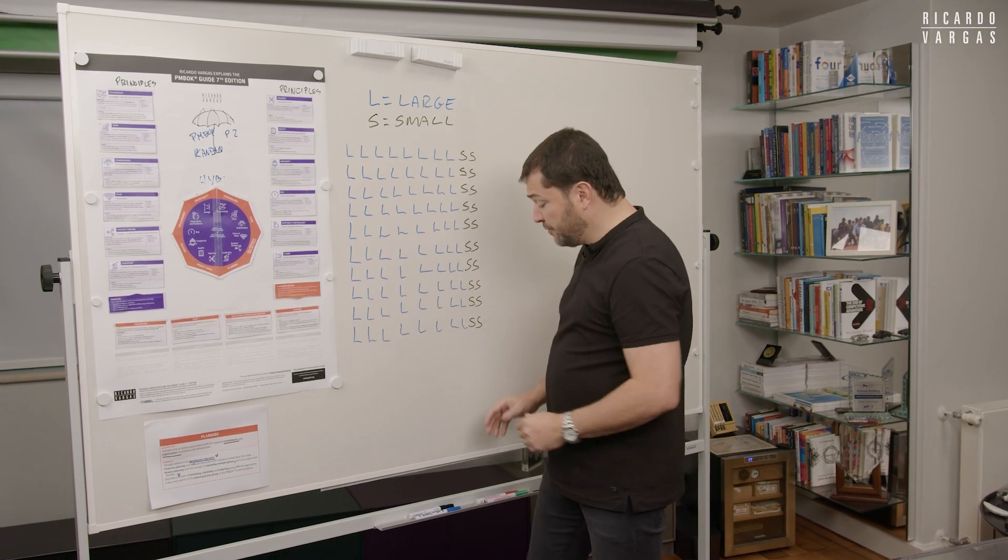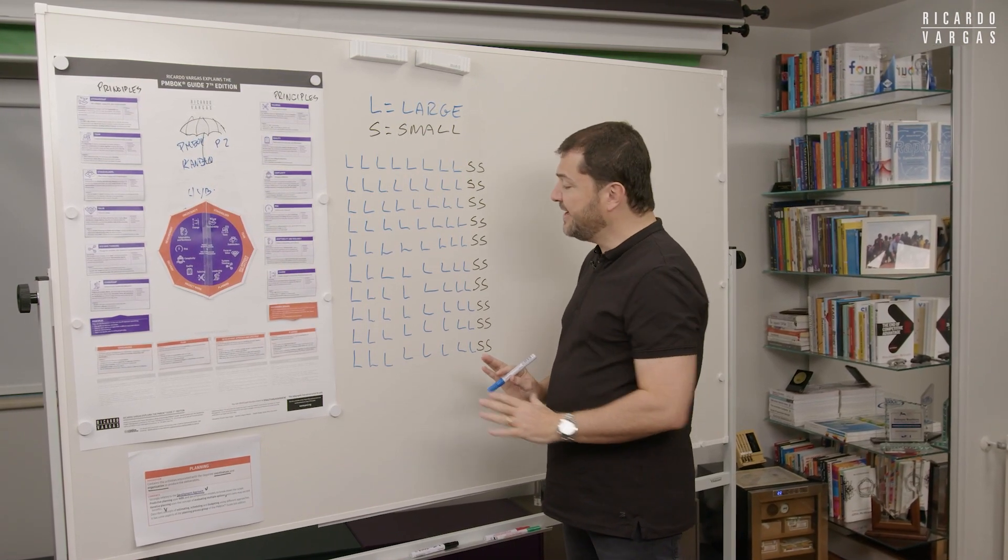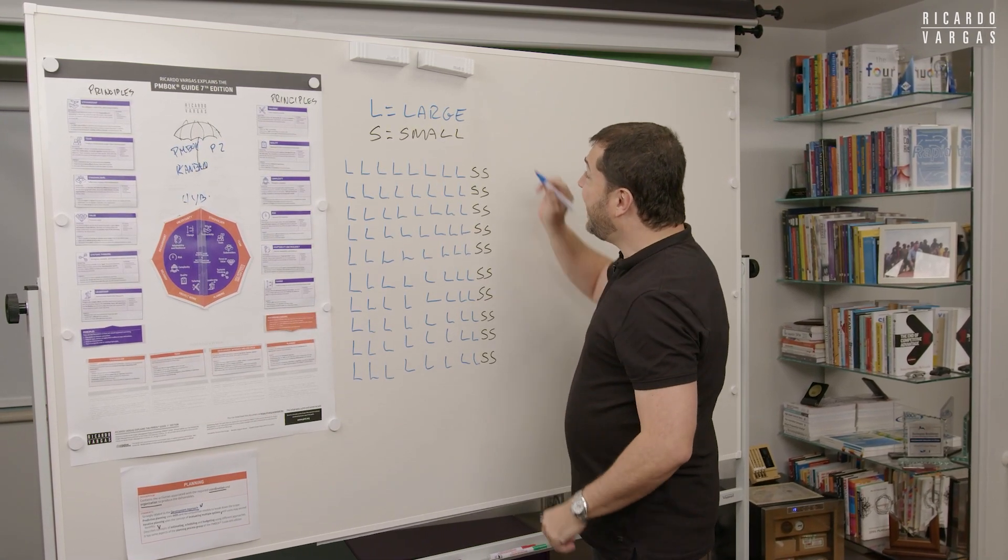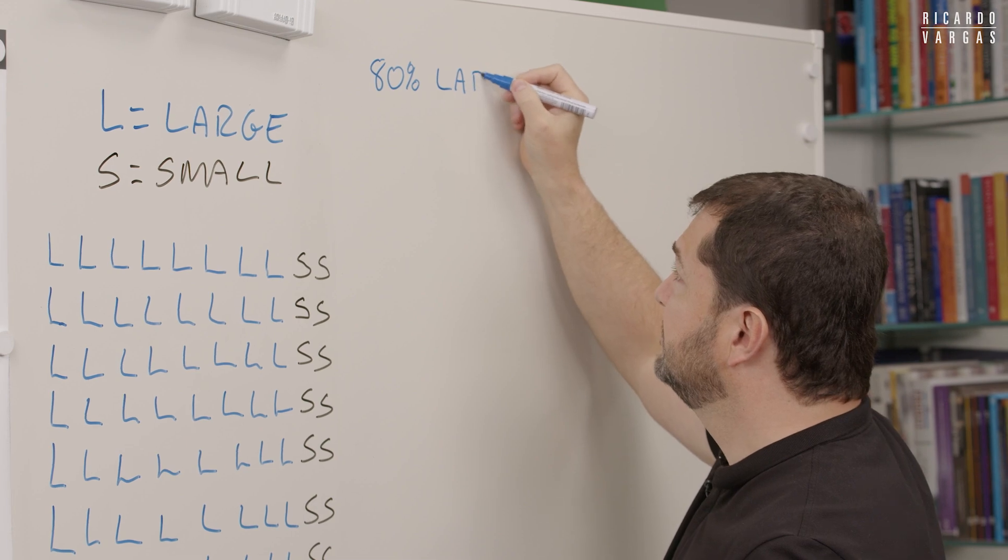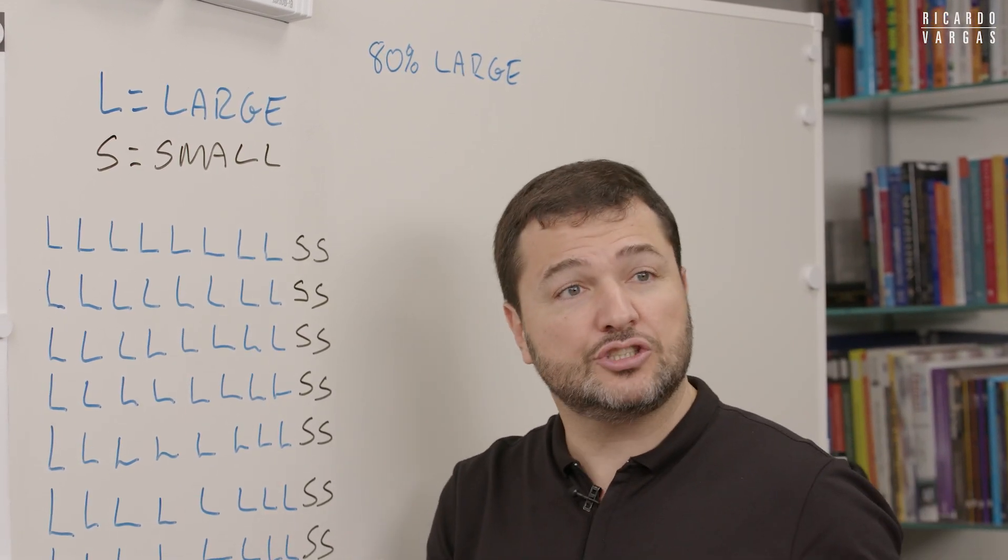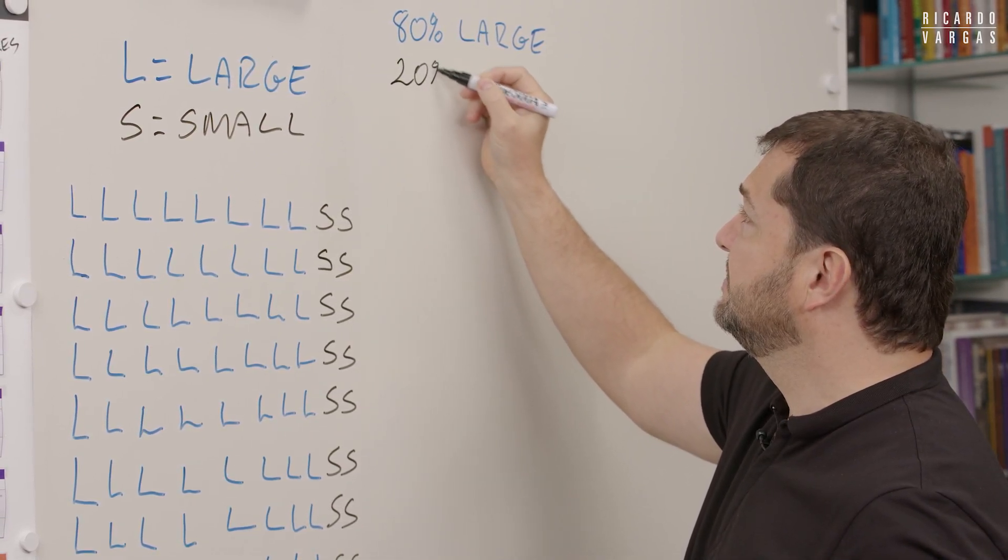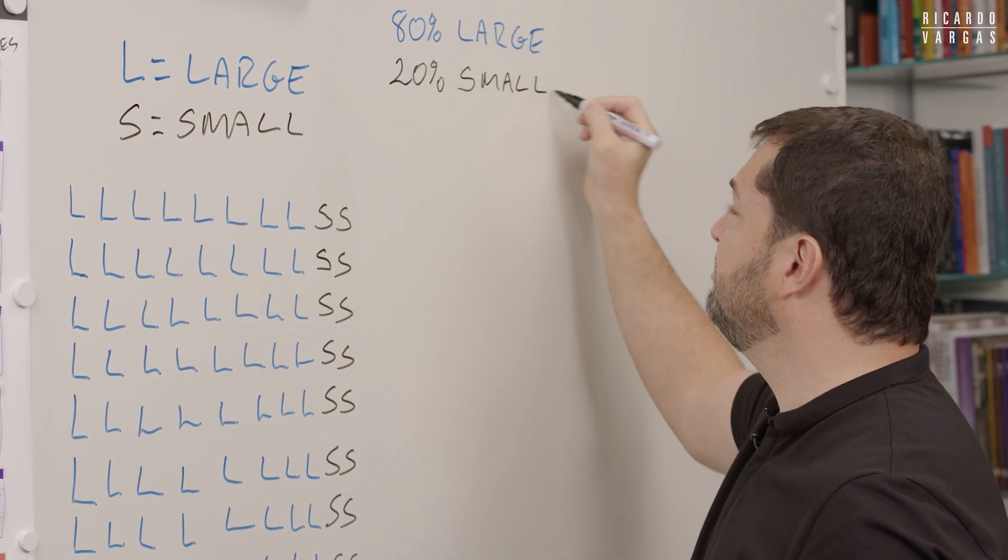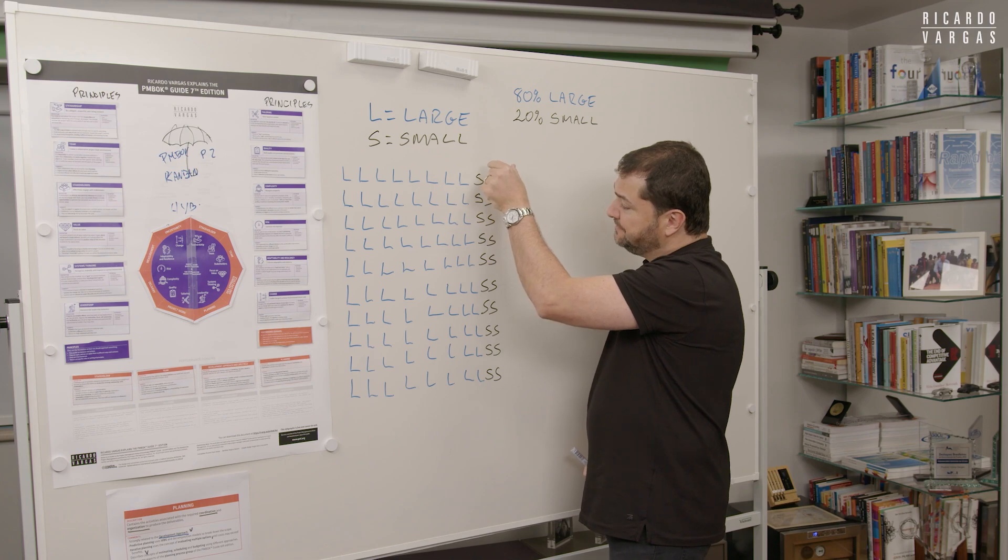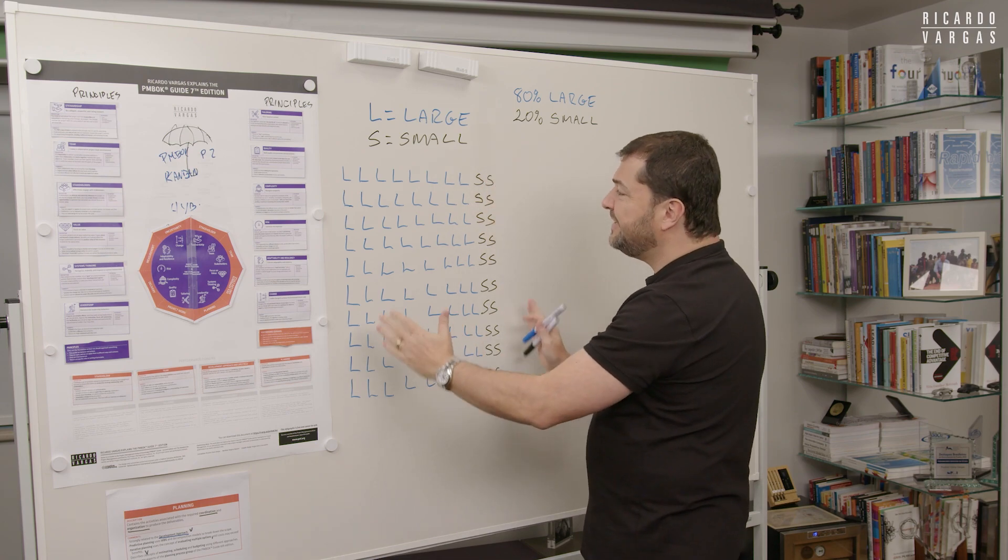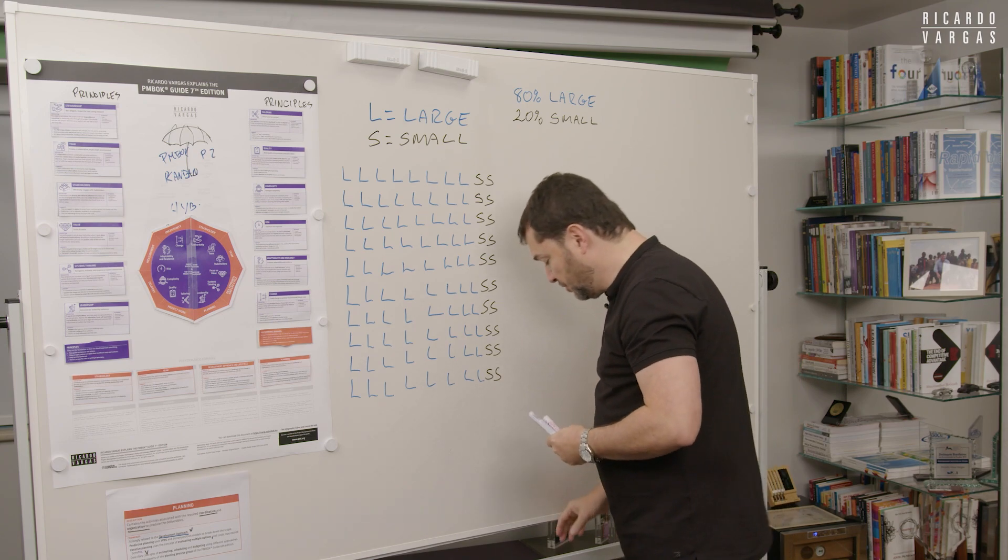I prepared this before I record the class. Let's suppose this is the whole ecosystem of suppliers. I have 100 suppliers here and 80% of the suppliers that supply to my project are large companies. I have a set of criteria to define what is a large supplier and 80% of them are large suppliers. If 80% are large, 20% of my universe are small. I'm not considering medium now. So what I did, I drew 80 L's and 20 S's just to see my universe. I just drew this to make it easier for you to understand physically what I want to talk.